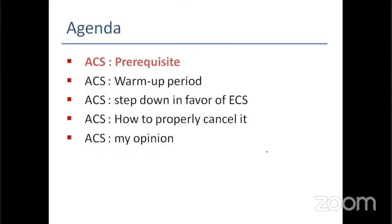We all know, as DBAs and developers, the importance of using bind variables for the availability, scalability, and security of transactional databases. This is why I always advise people to use bind variables, particularly for OLTP databases. However, while bind variables are vital and crucial for transactional databases, they nevertheless introduce a performance threat. Imagine two different bind variable values processing different amounts of rows — at the end of the day they will share the same execution plan, which is not always good from a performance point of view.